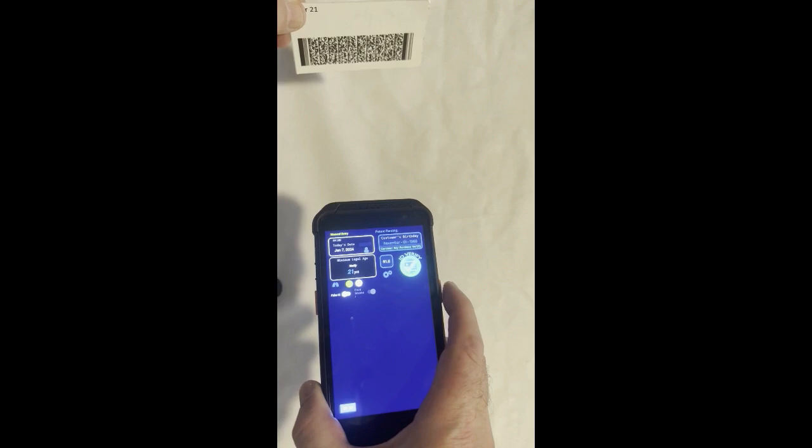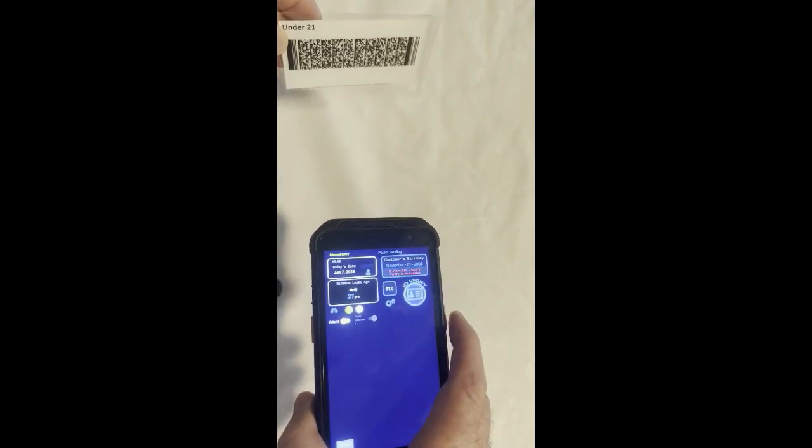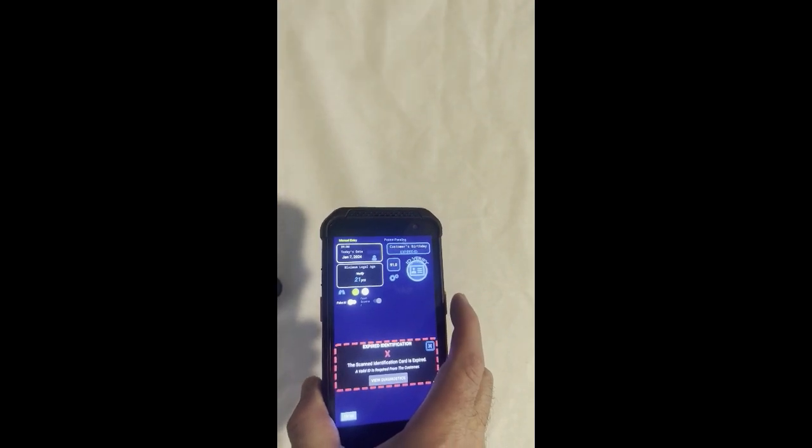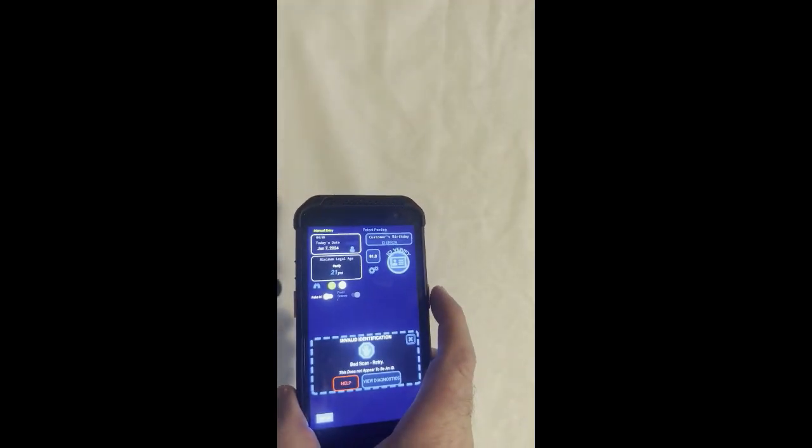Here's what an over 21 scan looks like. Here's what an under 21 scan looks like. Here's what an expired ID looks like. Here's what an invalid scan looks like.